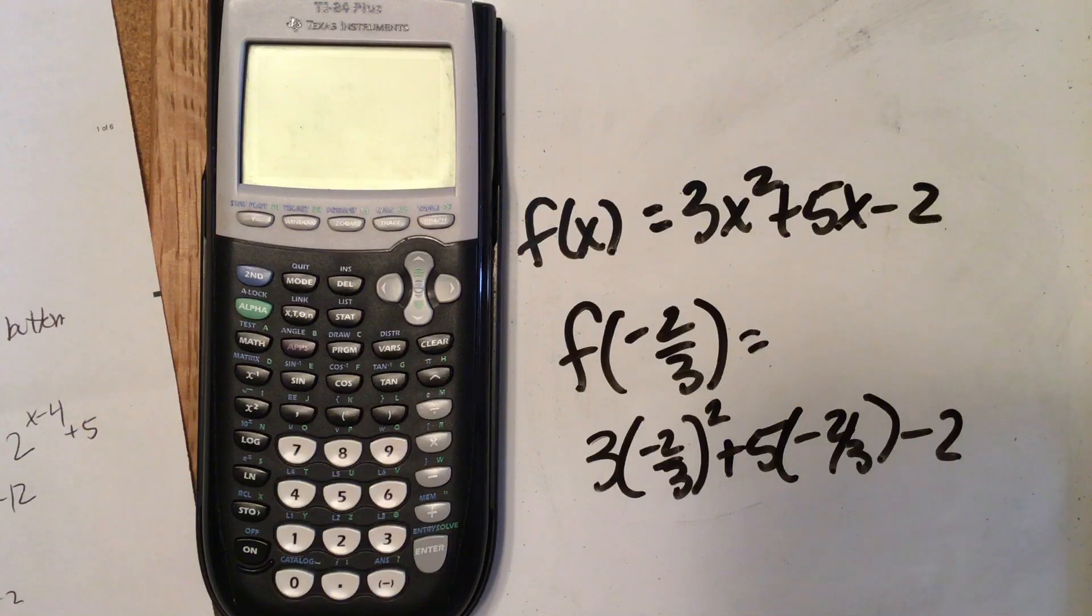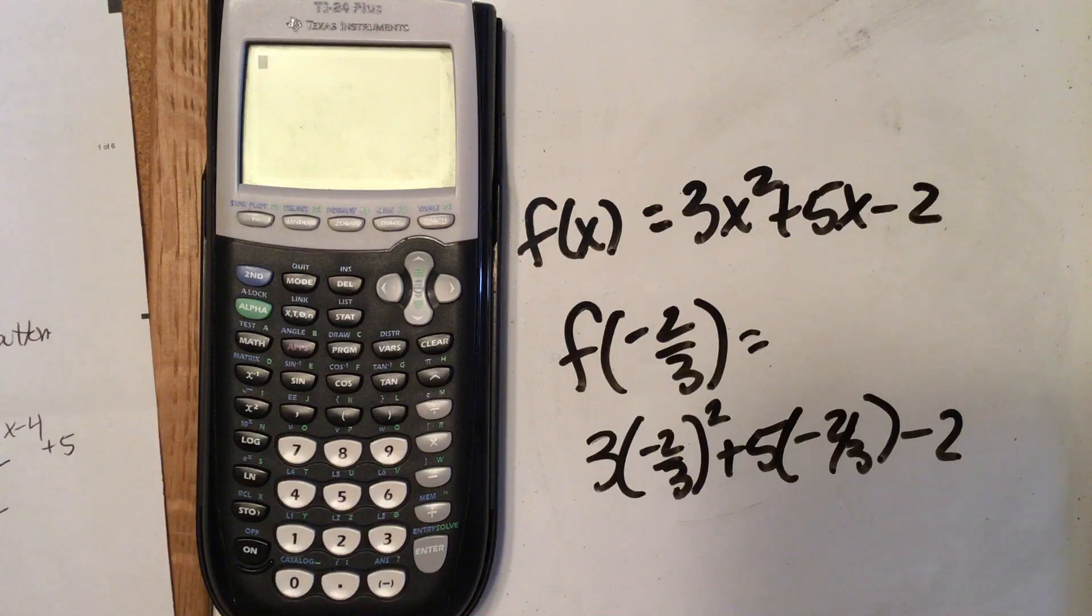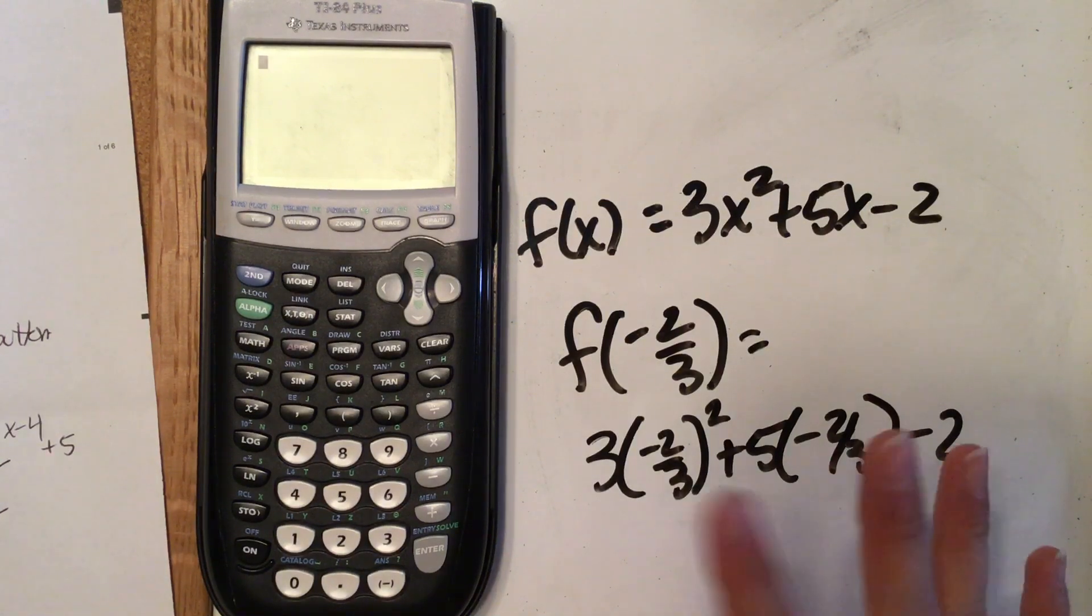So what you can do is store the -2/3 value to a variable, and then use that variable here instead of writing -2/3 each time. Depending on what your problem is, it will depend on if this is useful or not and if it's actually time saving, but it is a nice thing to have.